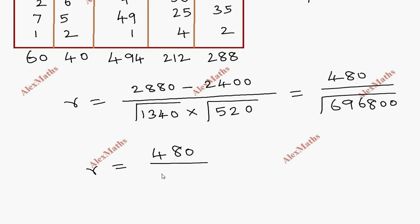The denominator simplifies to approximately 34.75 squared character couple. After division, you get a value of positive 0.575.